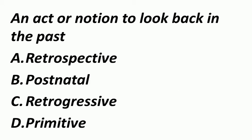An act or notion to look back in the past — यानि कोई ऐसा act जिसमें past के बारे में ध्यान रखा जाता है, तो ऐसे act को कहते हैं Retrospective. Retrogressive मतलब किसी अच्छी चीज से बुरी चीज में convert होना — from a better to a worse state. Primitive मतलब preserving the character of an early stage in the historical development of something.